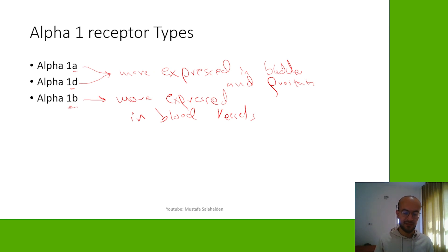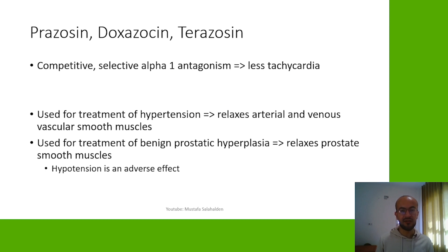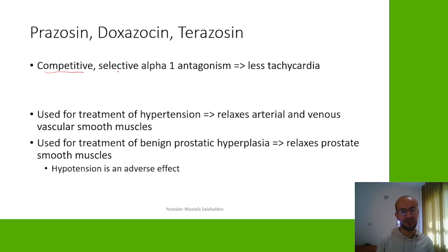Now let's talk about prazosin, doxazosin, and terazosin. These drugs are all competitive, meaning they compete with the agonist — which is norepinephrine — to block the alpha-1 receptors. Because they are selective for alpha-1 receptors, they have selective alpha-1 antagonism, and because of that, we have less tachycardia with these drugs.